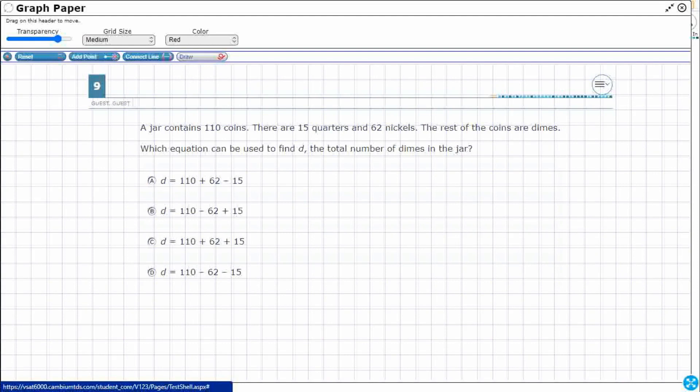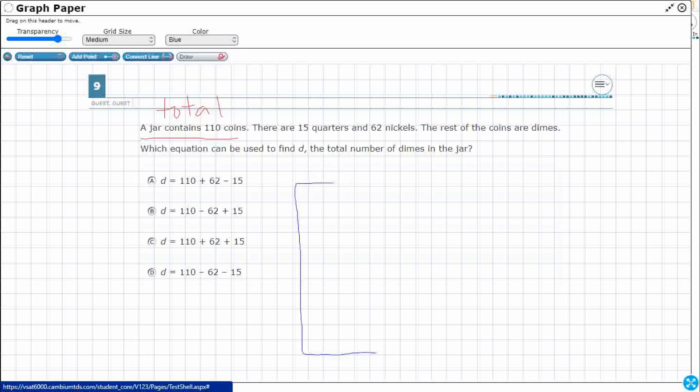We've got a jar with 110 coins. Alright, so you know what that looks like to me? That looks like the total. I'm going to draw a jar that's got some coins in there. You know what, this would be my jar. It would be a blue rectangle. Let's pretend that's my jar.